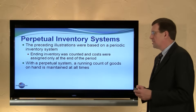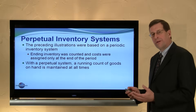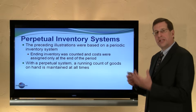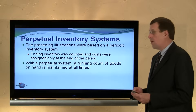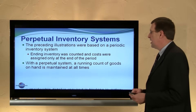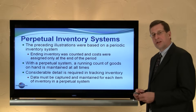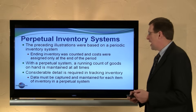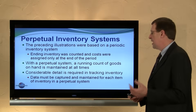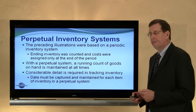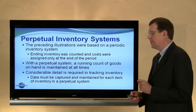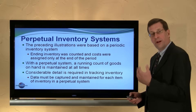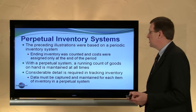With a perpetual system, we're going to maintain a running record of how much inventory we have and continually update our cost of goods sold and inventory accounts. This requires considerably more attention to detail and a detailed tracking system. Data must be captured and maintained for each inventory transaction as it occurs, whether it is a purchase or a sale.